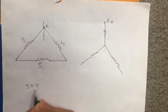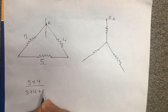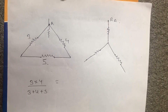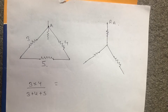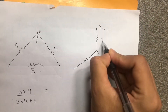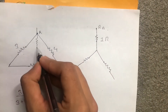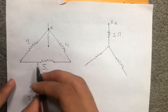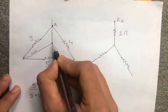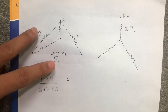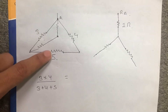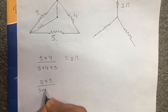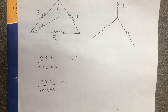For the first example: RA equal to 3 into 4 upon 3 plus 4 plus 5 equal to 12 upon 12 — that is 1 ohm. Similarly, RB: this is 3 into 5 upon 3 plus 4 plus 5 equal to 15 upon 12.